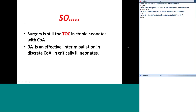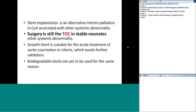In conclusion: surgery is still the treatment of choice in stable neonates with coarctation. Balloon angioplasty is effective as interim palliation for discrete coarctation associated with other systemic abnormalities such as arch hypoplasia, borderline left ventricle, or other associated systemic conditions. Growth stents are suitable for acute treatment of aortic coarctation in infants but need further validation. Biodegradable stents are yet to be widely used.